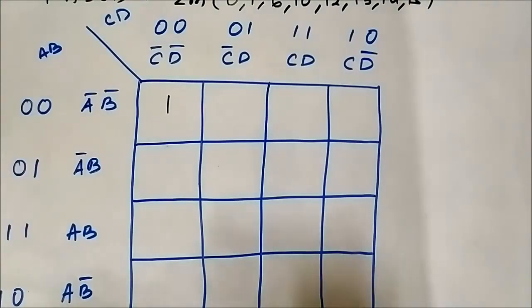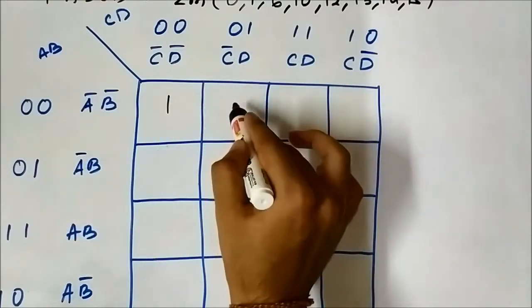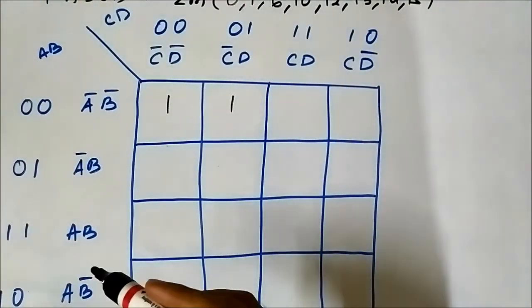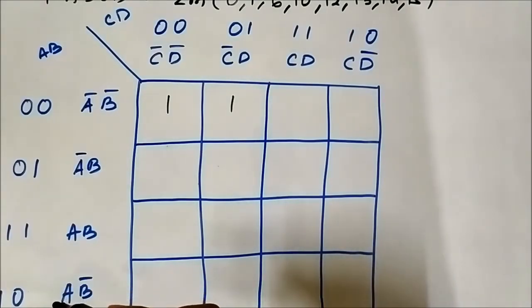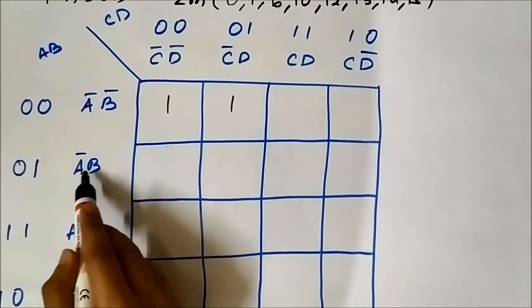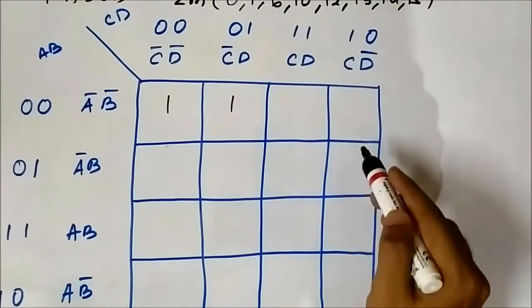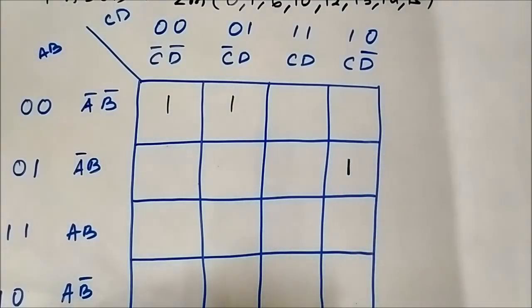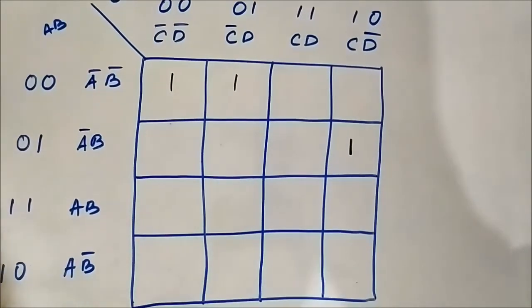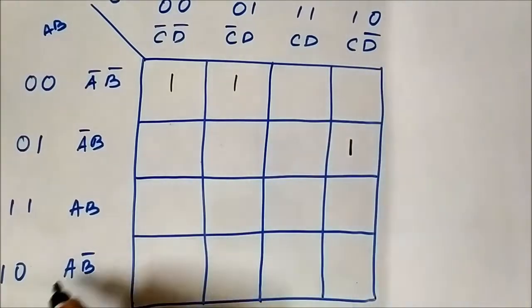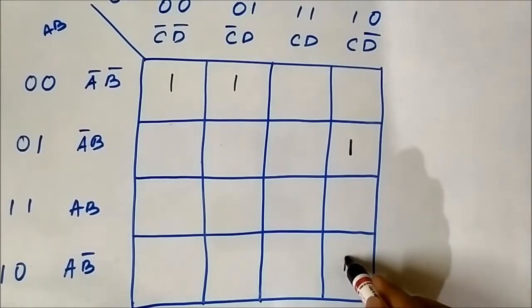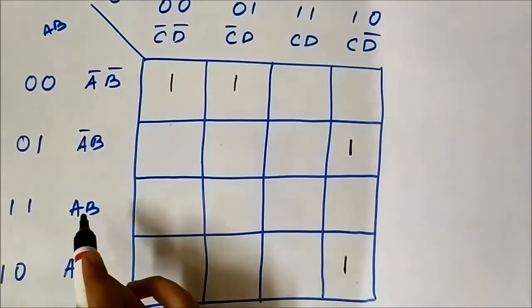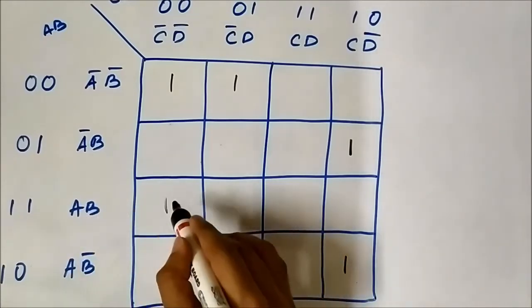For A̅BCD̅: A̅B is horizontal, CD̅ is vertical — marked as 1. For AB̅CD̅: A is horizontal, B̅CD̅ is the combination — marked as 1. For ABC̅D̅: A, B horizontal, C̅D̅ vertical — marked as 1. For ABC̅D: A, B horizontal, C̅D vertical — marked as 1. These cells are all marked as 1 because it is an SOP type expression, so we mark the cells corresponding to the Boolean terms present in the expression.